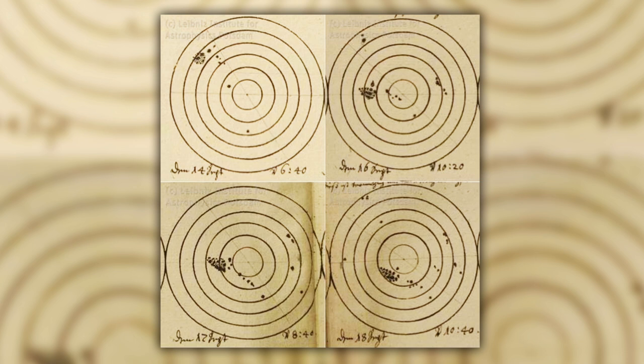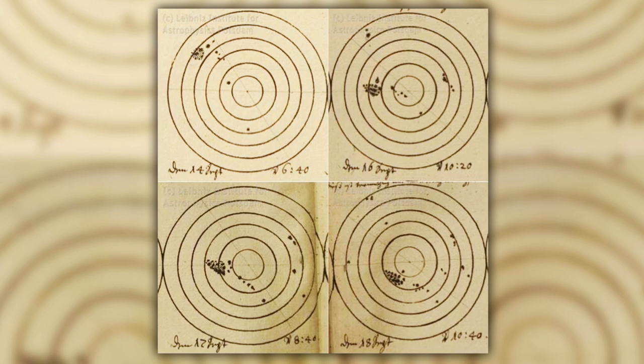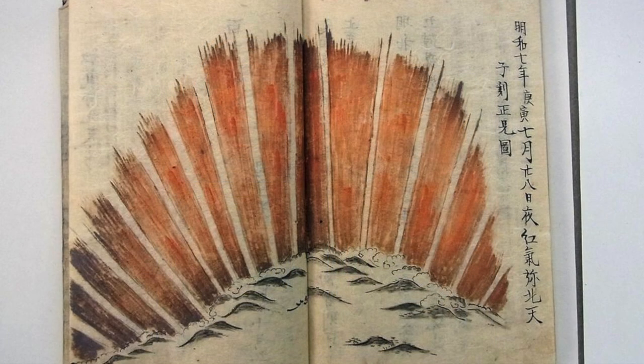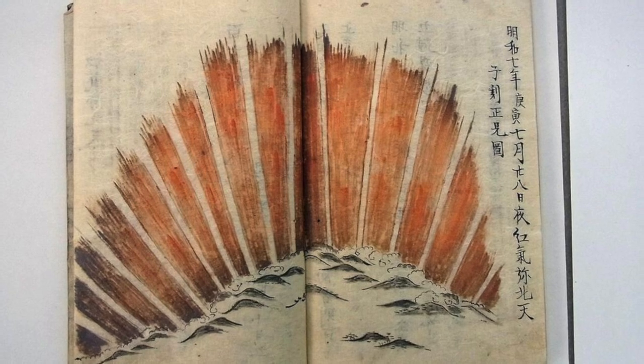Historic drawings of the sunspot responsible have been discovered, and it was twice the size of Carrington's. The resulting storm is thought to be of a similar size, but it did last several days longer.